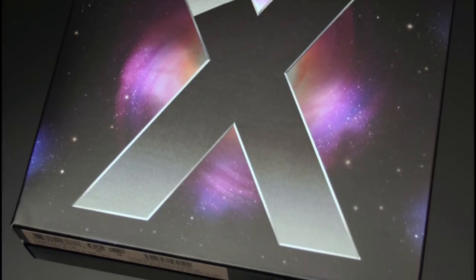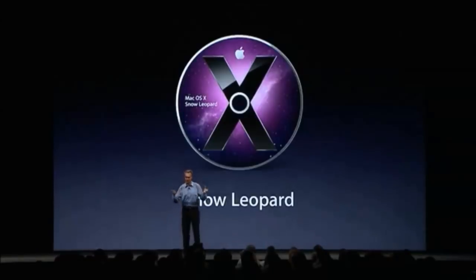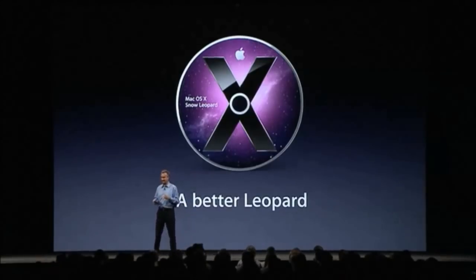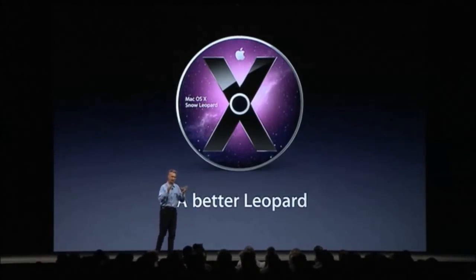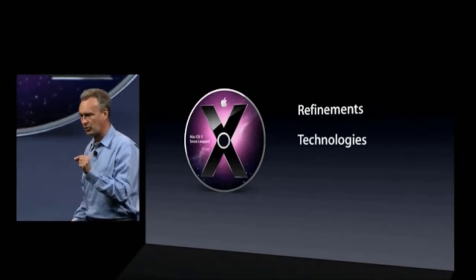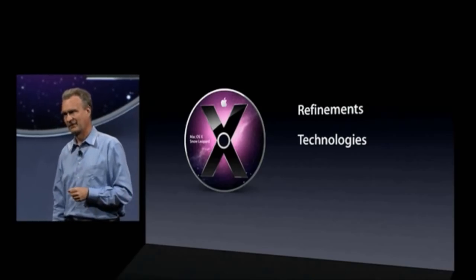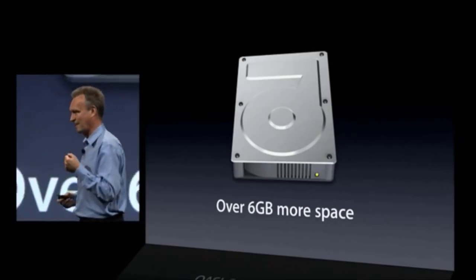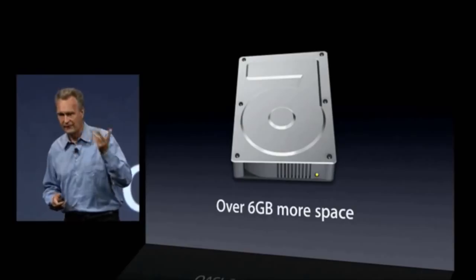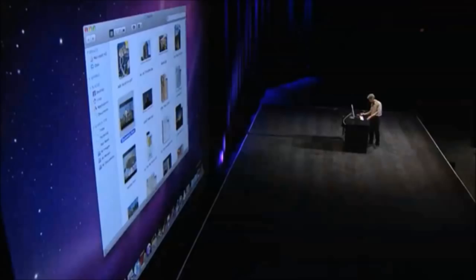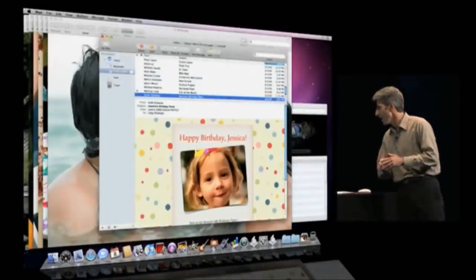Mac OS X 10.6 Snow Leopard was released on August 28, 2009, and it was the first version of Mac OS X to be sold for $29 instead of the usual $129. Because of the low price, initial sales were significantly higher than its predecessors. Rather than delivering big changes to appearance and functionality, Snow Leopard focused on under-the-hood improvements like enhancing performance, efficiency, and stability. The most noticeable changes were increased disk space after installation, a more responsive Finder, faster Time Machine backups, more reliable disk ejects, improvements to the Preview application, and a faster Safari web browser.